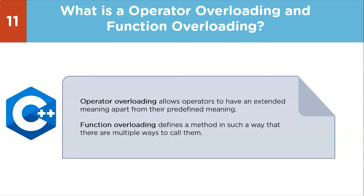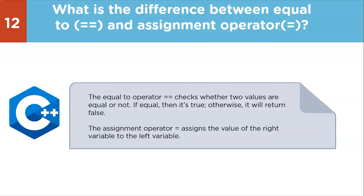Next question: what is the difference between the equal-to operator and the assignment operator? The equal-to operator checks whether two values are equal or not — returning true if equal, otherwise false. The assignment operator assigns the value of the right variable to the left variable.